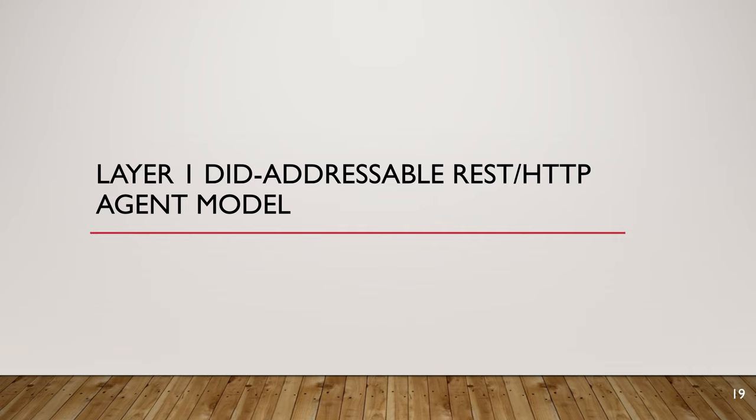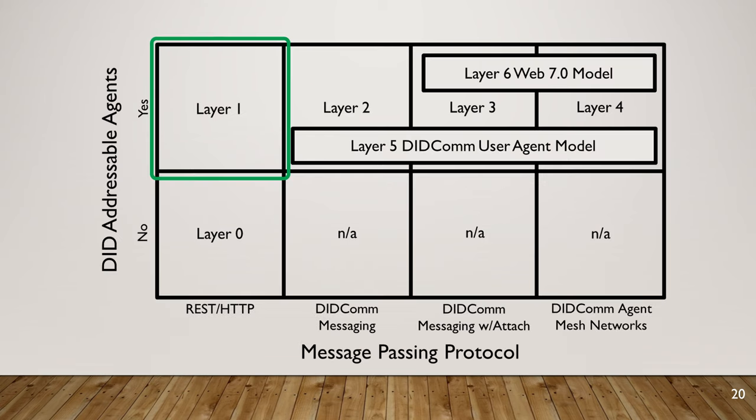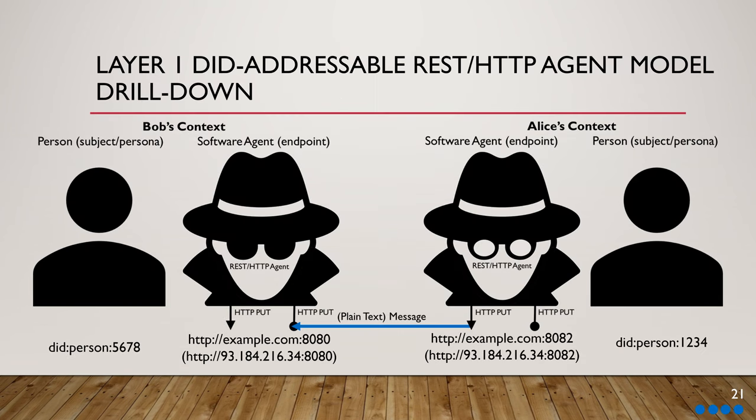Moving up to layer one in the Web 7.0 DIDCOM ARM, we're adding DID addressability while still doing plain REST over HTTP communications between a sender agent or client and a receiving agent. The blue line is still just REST over HTTP plain text. We have Alice on the right representing the sender, and Bob on the left. Both Alice and Bob have software agents capable of representing them or acting on their behalf.